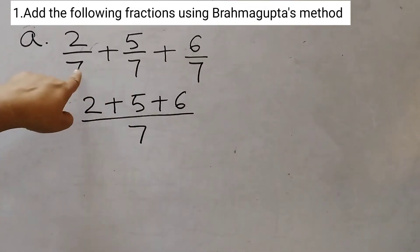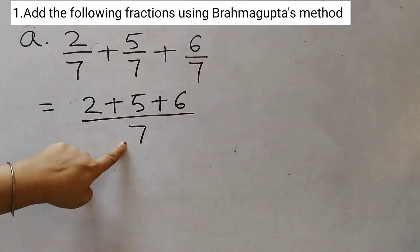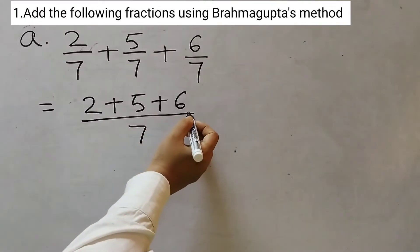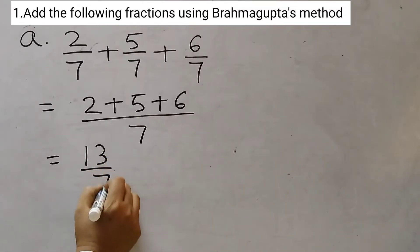So this is 2 plus 5 plus 6 by 7. We don't add the denominators. We just add the numerators and keep the denominator as 7. Now 2 plus 5 is 7, 7 plus 6 is 13. So this will be 13 by 7.